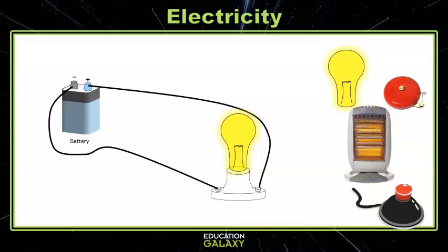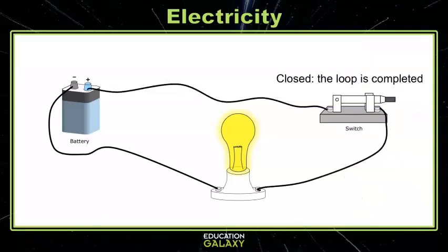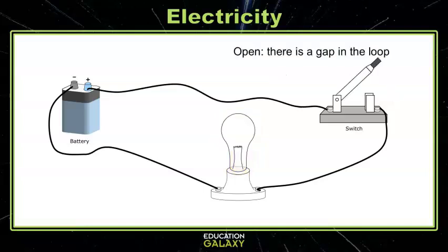But you'd probably want to turn this light off again, so let's add a switch. The switch can either be closed, which means the loop is completed, or open, meaning there's a gap in the current, which turns our light off.